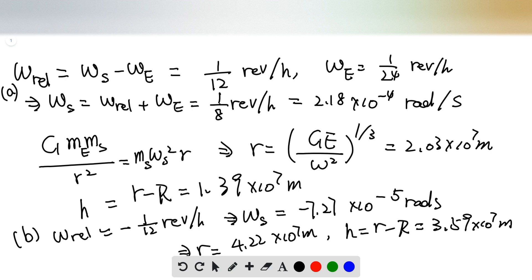So from this equation, we can express the distance from the center of the Earth to the satellite is equal to the constant G times the mass of the Earth, divided by angular speed squared, and this whole thing to the one-third.